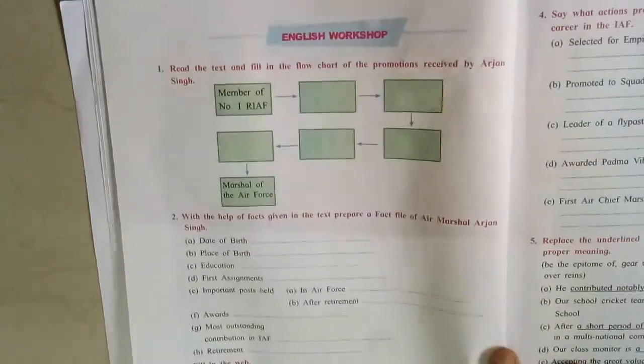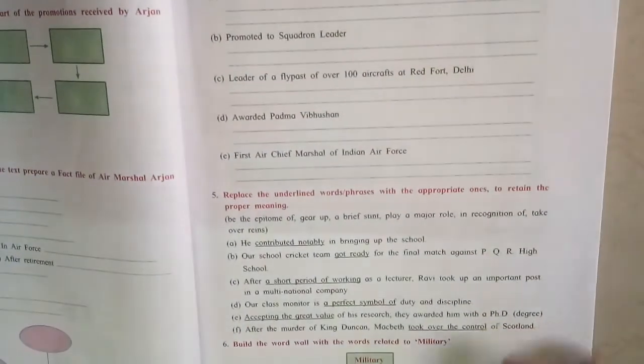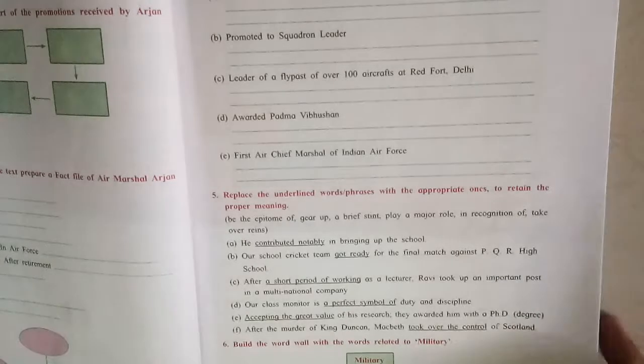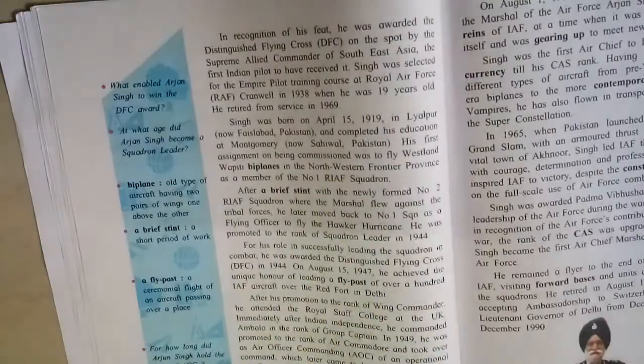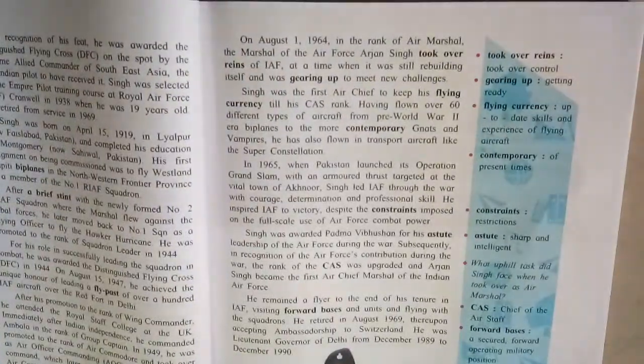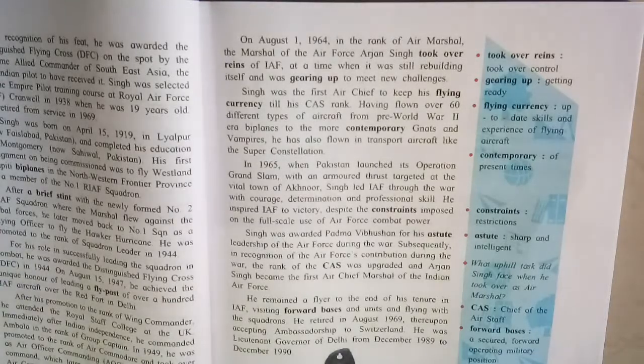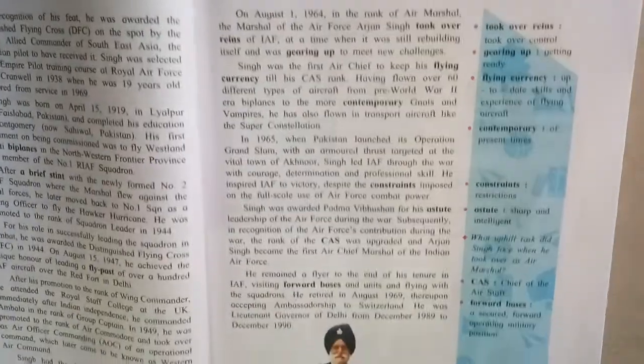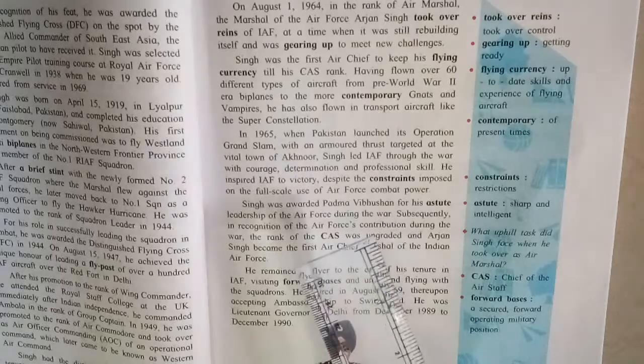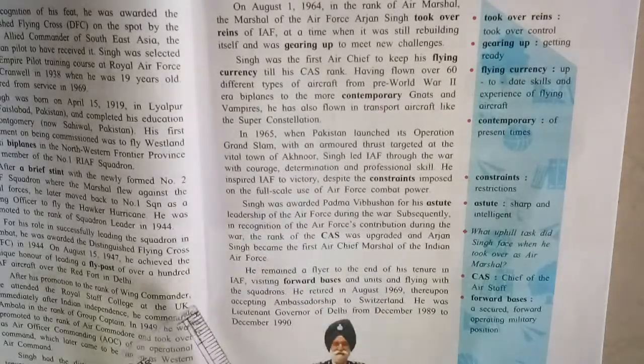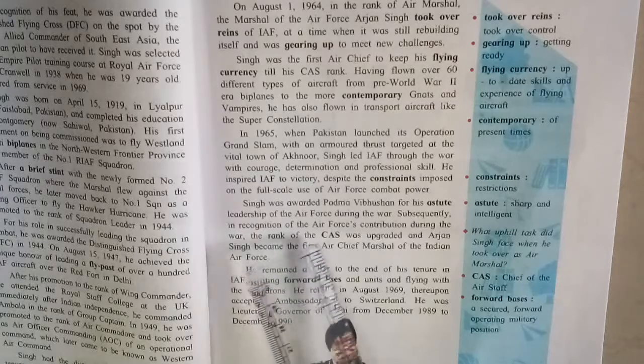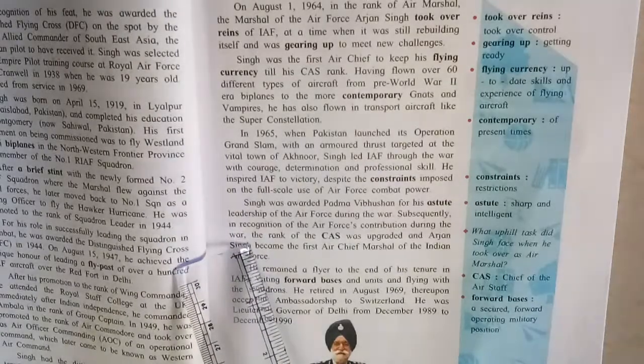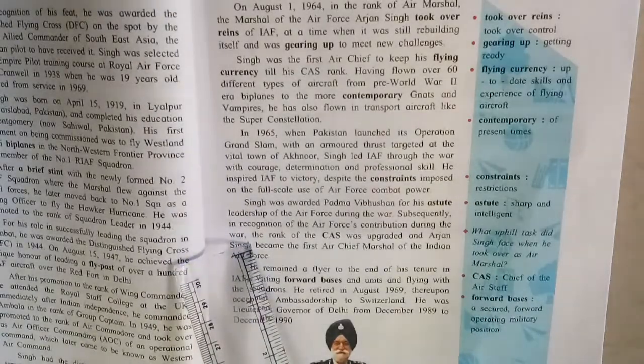Now question D: Awarded Padma Vibhushan. Page number 17, fourth paragraph, first line. Singh was awarded [fill in the blanks]. See here, from 'Singh was awarded' till 'during the war' on line four. That's the answer. Clear?